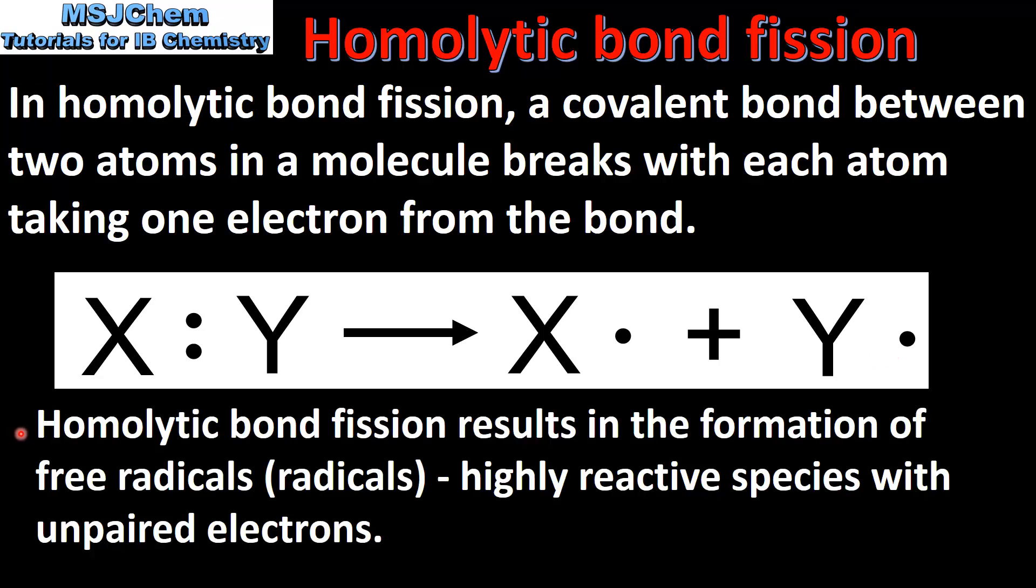This type of bond fission results in the formation of free radicals or radicals, these are highly reactive species with unpaired electrons. Free radicals are represented by the use of a dot which we can see here for X and Y.